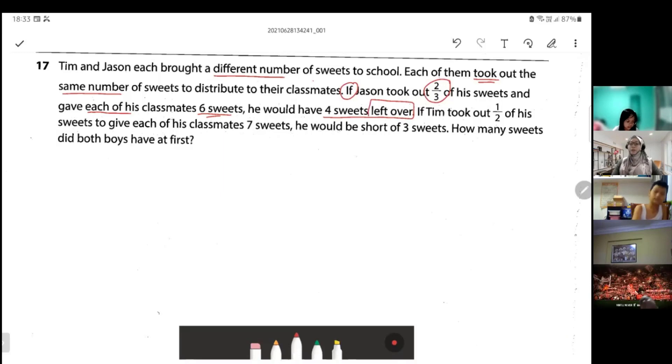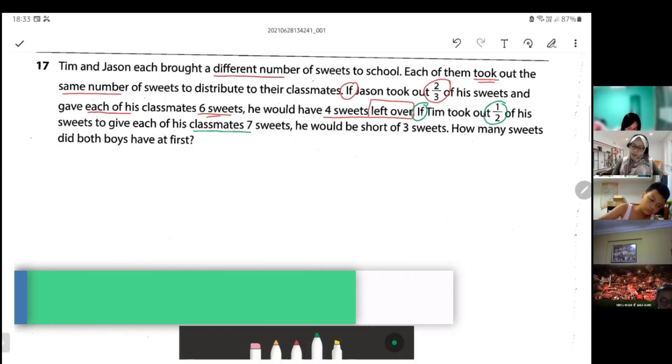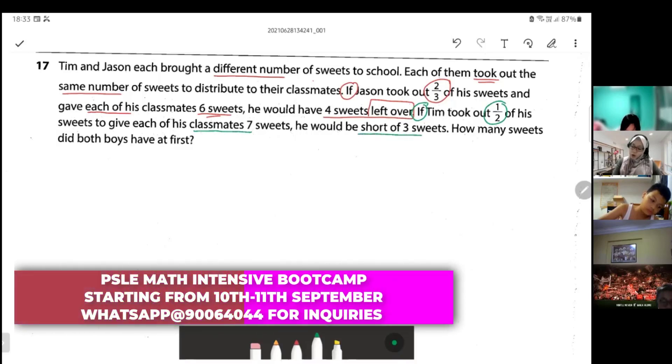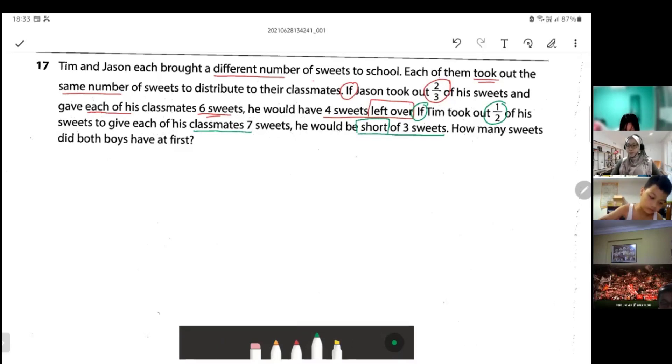This is one important keyword. Then, if Tim took out half of his sweets to give each of his classmates seven sweets, he would be short of three sweets. Very important keyword there as well. How many sweets did both boys have at first?